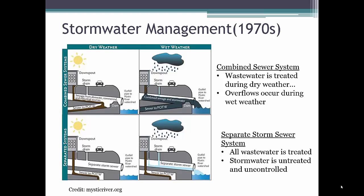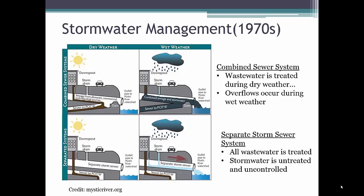This graphic shows the differences between combined and separate sewer systems. The top two figures show a combined sewer system. During dry weather, all wastewater is directed to a wastewater treatment plant. But during rainstorms, the wastewater treatment plant cannot handle both wastewater and stormwater flows, and the excess flows are discharged to rivers and lakes untreated. The bottom two figures show a separate sewer system. In this system, all wastewater is treated at the wastewater treatment plant regardless of the weather, but stormwater is left to discharge to rivers and lakes untreated.